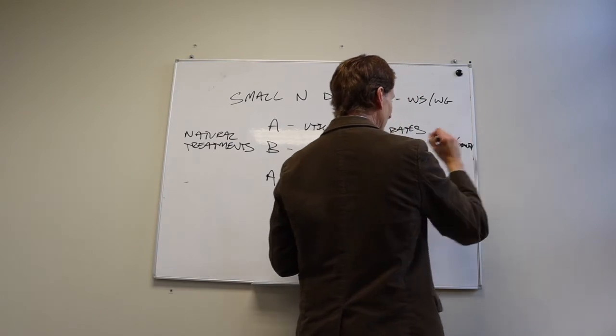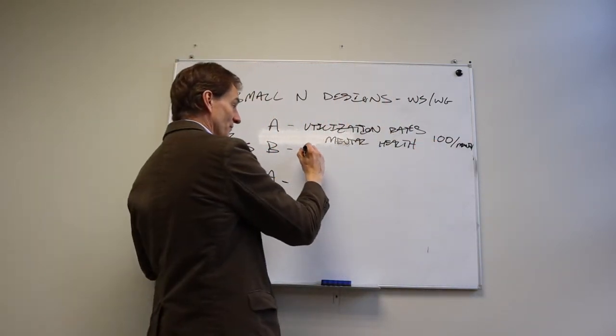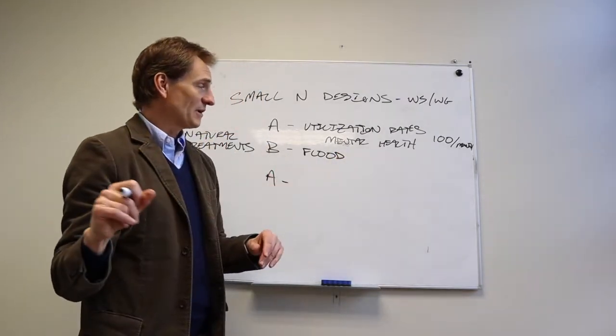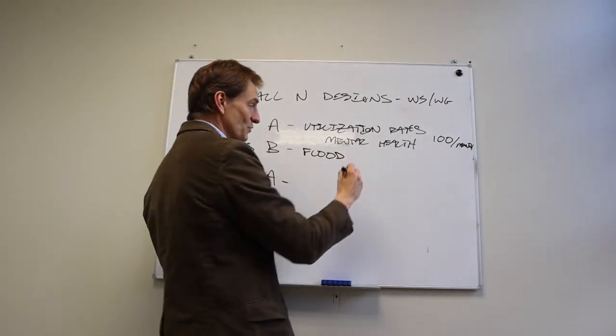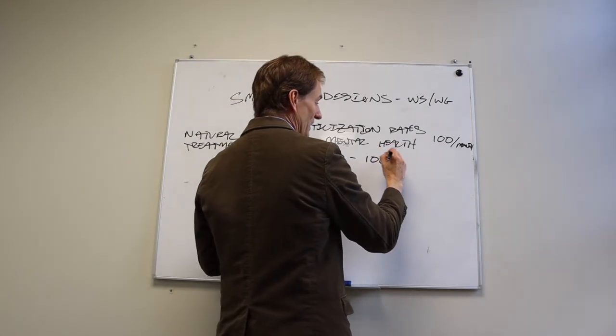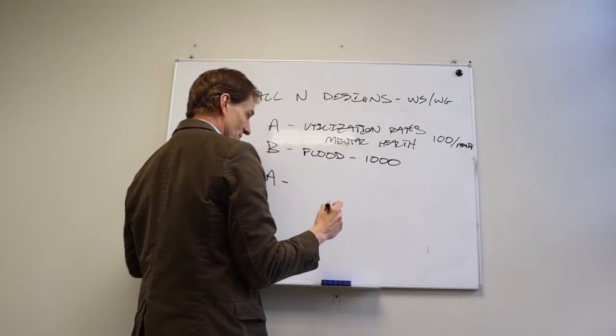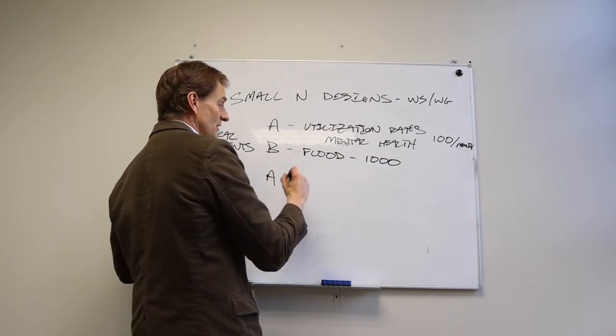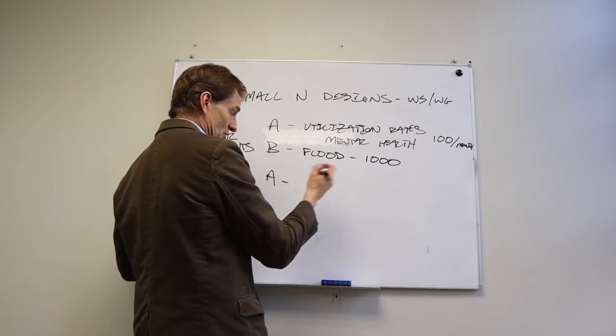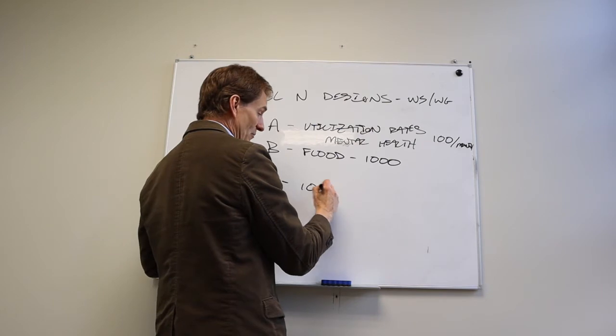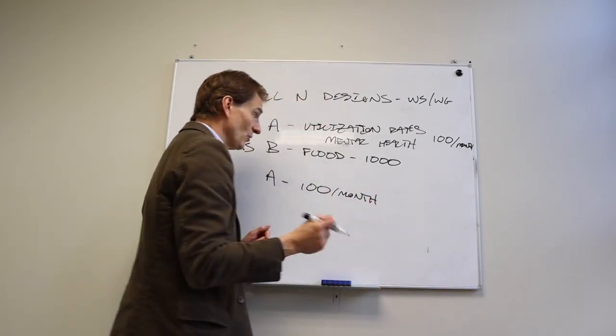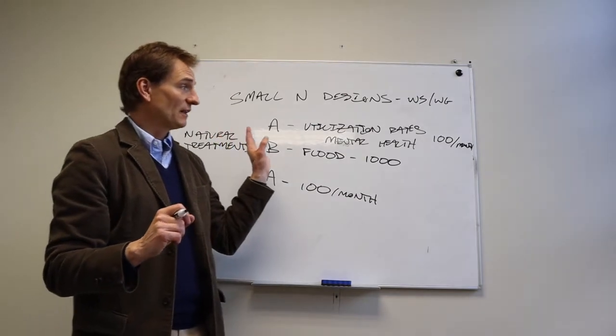So when the flood comes through, the utilization rate for mental health services goes way up. So let's say to a thousand visits per month, and then a year later, you're back to it's returned to the baseline. And so you're back to a hundred times per month.